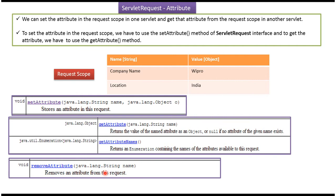If you want to get an attribute from the request scope, we can use the request object's getAttribute method — you have to pass the name and it will return the object. One more method is getAttributeNames, which will return an enumeration of attribute names. I will show you an example where we set attribute company name as Wipro and location as India in the request scope.